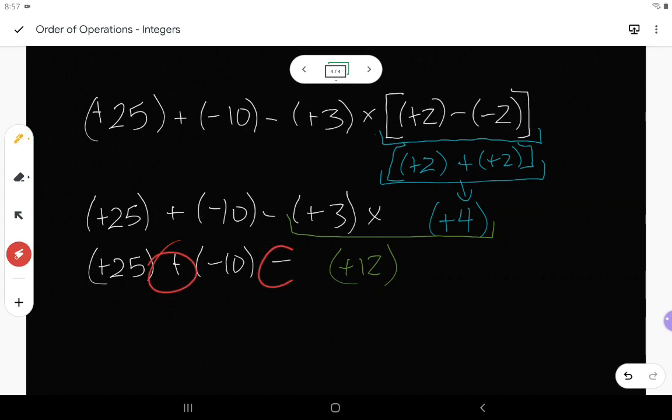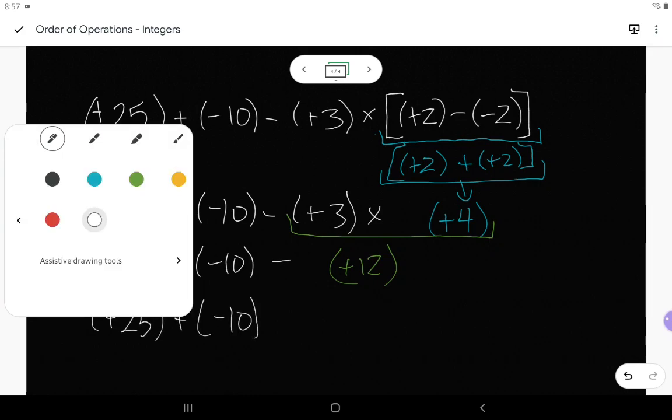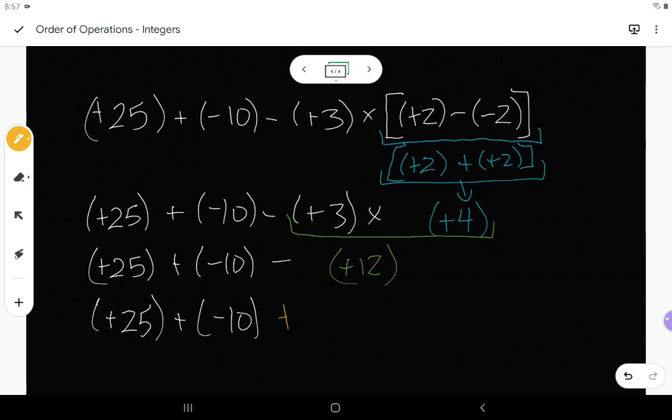My next step is going to be to get rid of this subtraction. Because I've got adding, I've got subtracting. So yes, I'm going to go in order from left to right, but I know I don't want to subtract. So since I don't want to subtract, I'm going to change that to an addition. I've got positive 25 plus negative 10, and then I'm going to rewrite that as adding negative 12.